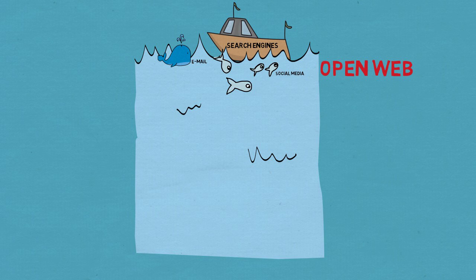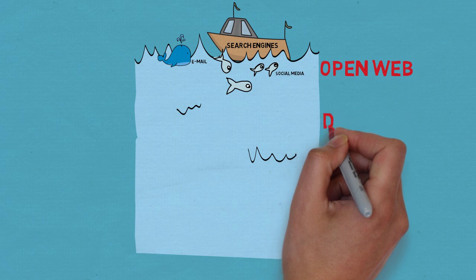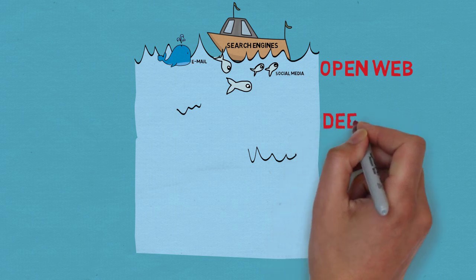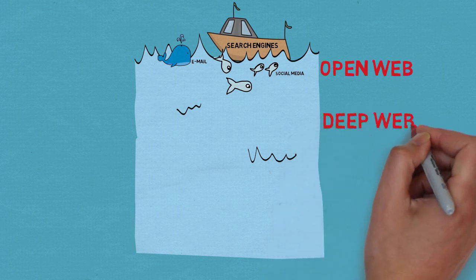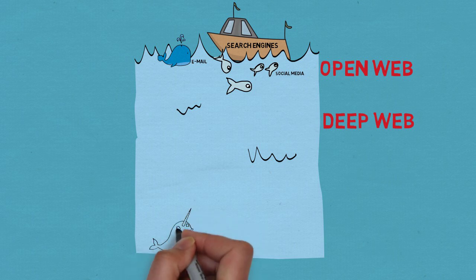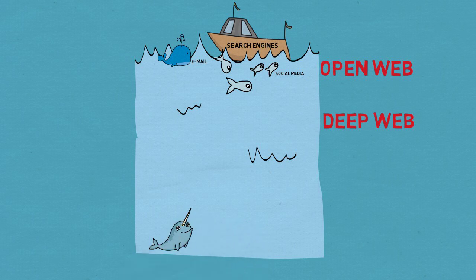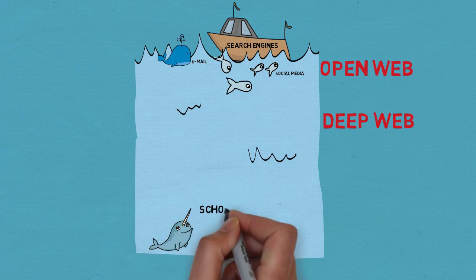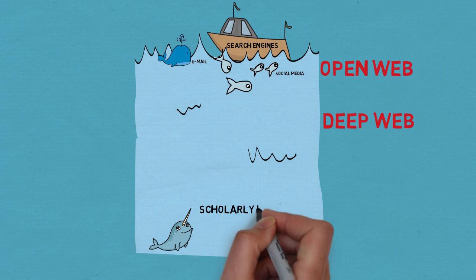The rest of the information out there, including most of the scholarly materials you are expected to use in college, live in what we call the deep web. There's a lot down there, but it's not free and open. Because scholarly information is more socially valued than, say, your grandmother's status updates, it costs money and is thus limited to those who can afford to access it.